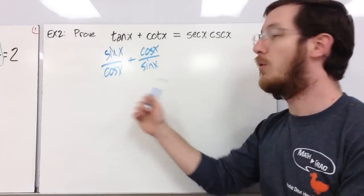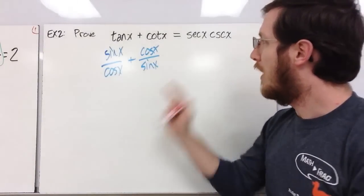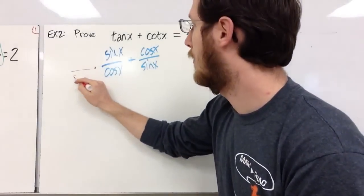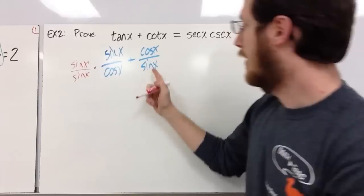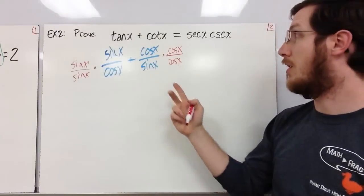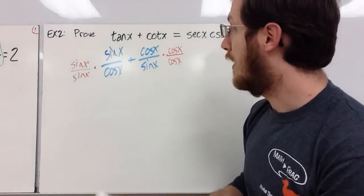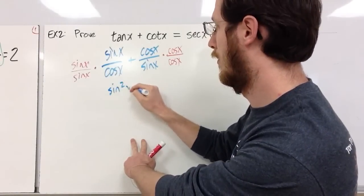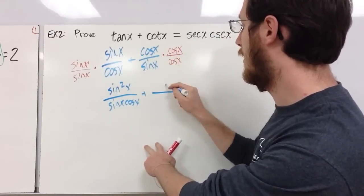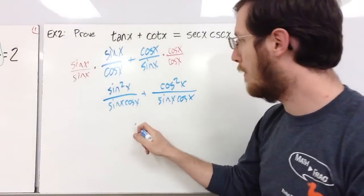We've got two terms here and we'll want to combine them into a single term. When we've got fractions we need a common denominator. For sin(x)/cos(x), I'm going to multiply top and bottom by sin(x); for cos(x)/sin(x), I'm going to multiply top and bottom by cos(x) — we do it on top and bottom so we don't change the value, just the form. Now we've got sin²(x) over sin(x)cos(x) plus cos²(x) over sin(x)cos(x) — common denominators, so we can combine them.